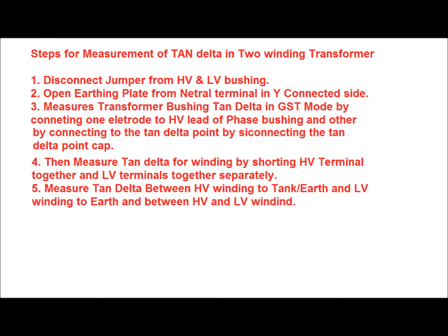Now, what are the steps for measurement of tan delta in a two-winding transformer? First, we have to disconnect the jumper from the HV and LV bushing. Then we have to open the earthing plate from the neutral terminal in the case of the Y-connected side of the transformer. Then we measure the transformer bushing tan delta in GST mode by connecting one electrode to the HV lead of the phase and the other to the tan delta point of the bushing. Before connecting the tan delta point, the tan delta cap should be disconnected from the bushing.